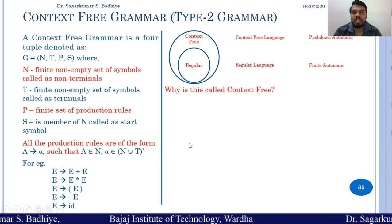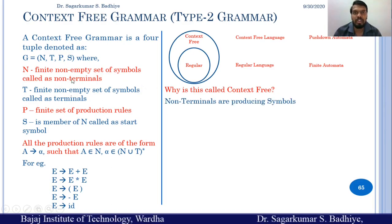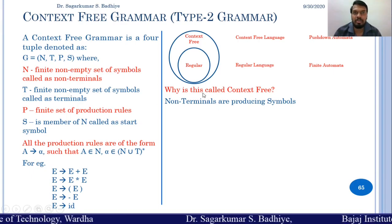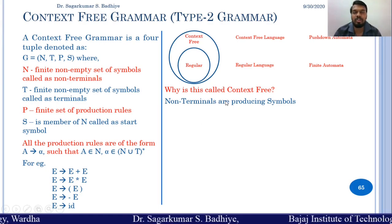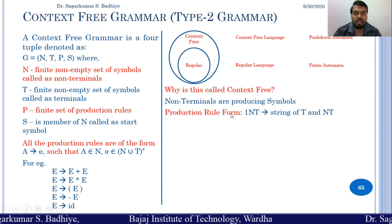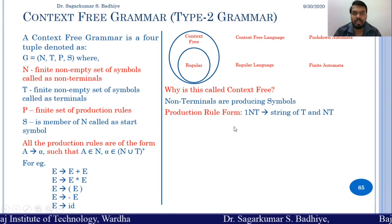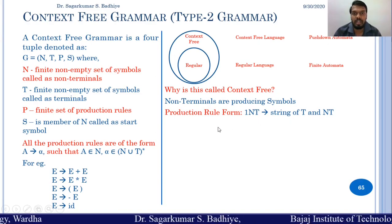Why is this called context free? Non-terminals are the producing symbols, meaning a particular non-terminal can be replaced by a certain set of symbols or a string of symbols. In context free grammar, the production rule has a single non-terminal on the left hand side, which derives to a string of terminals and non-terminals.